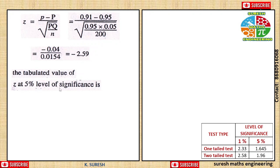The tabulated value at 5% level of significance: looking at the table, less than indicates one tail test, so at 5% the value is 1.645.